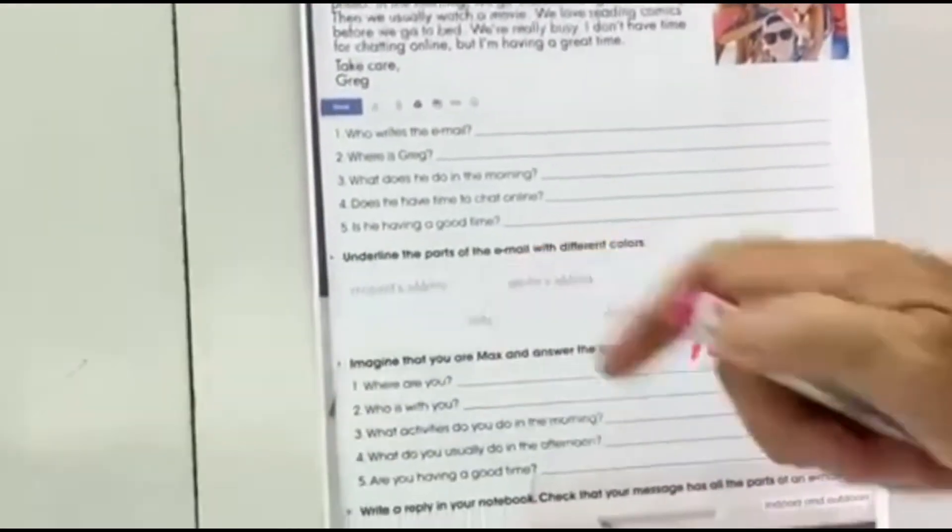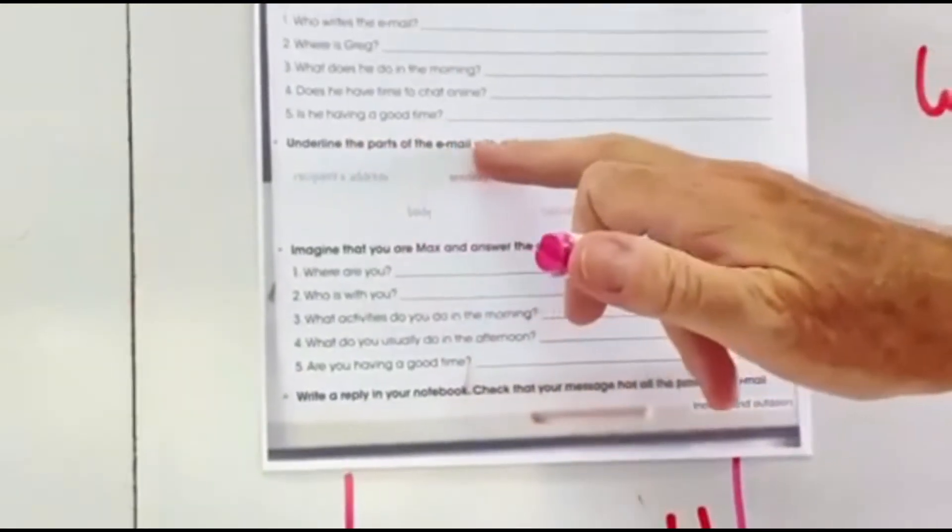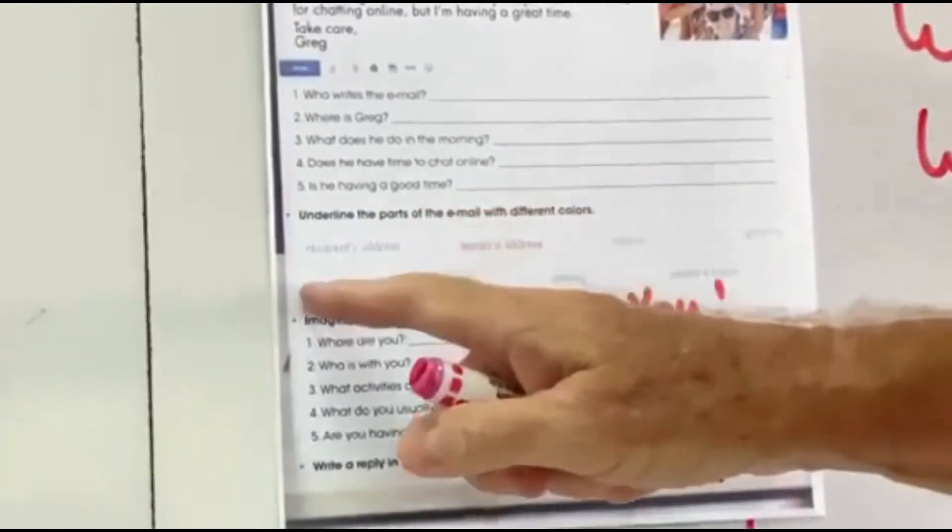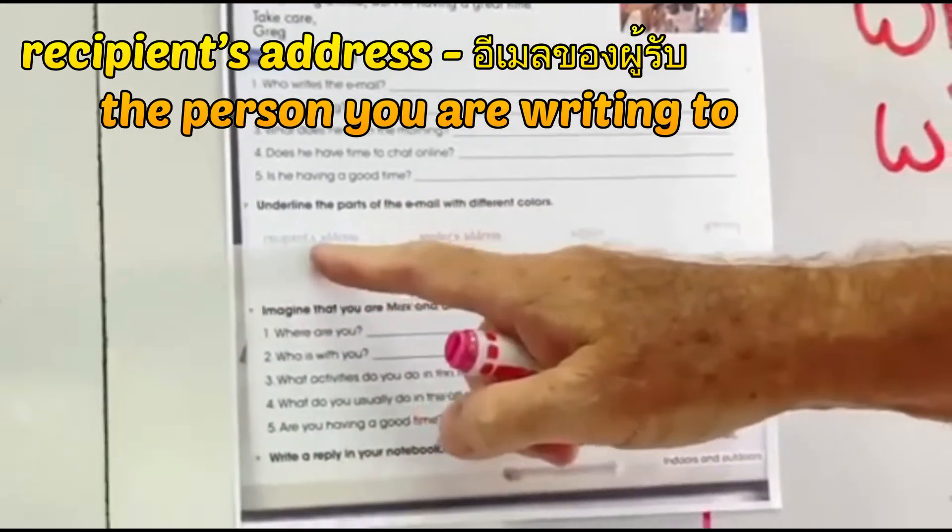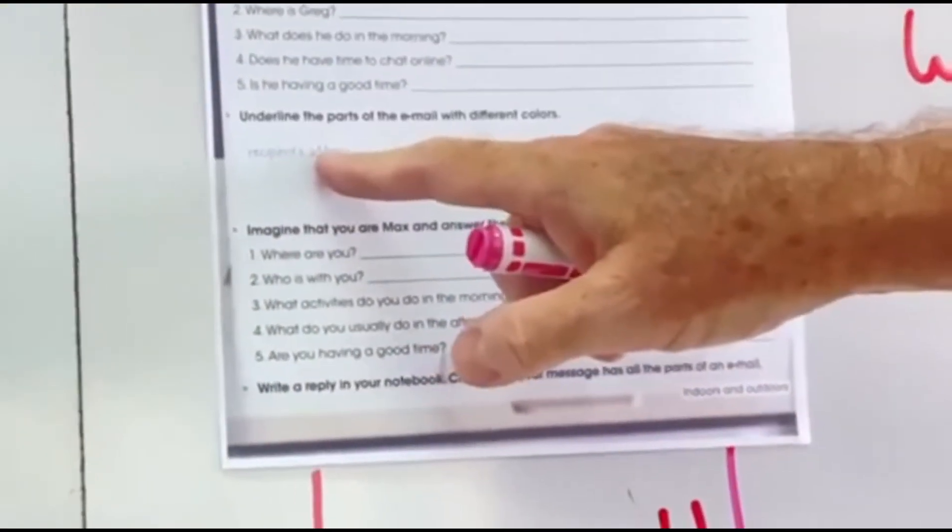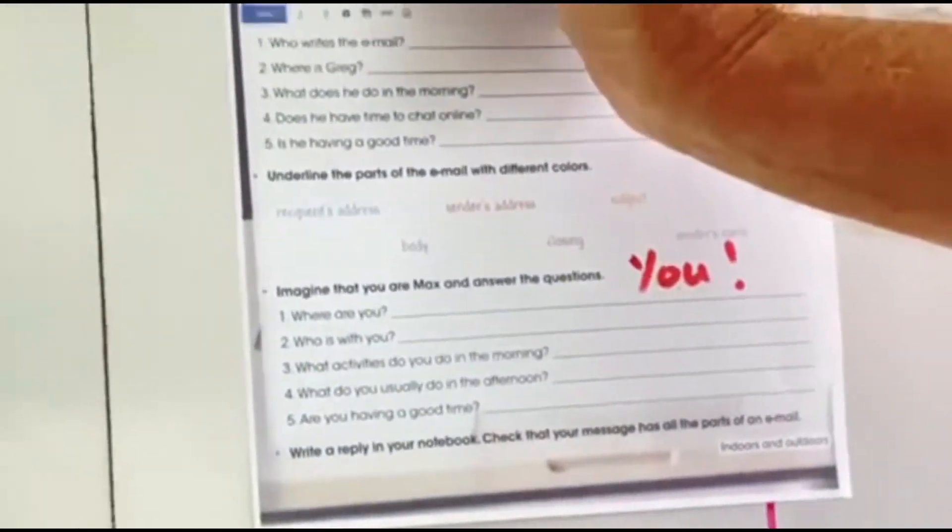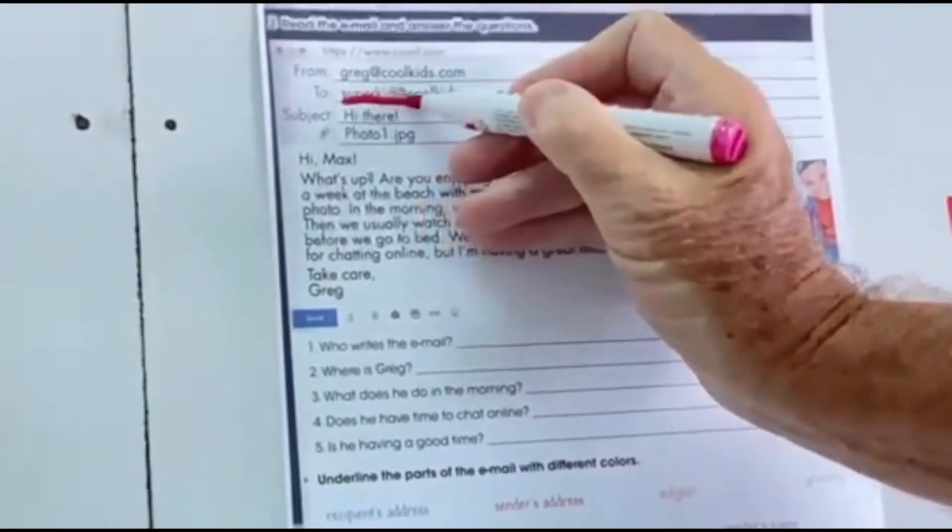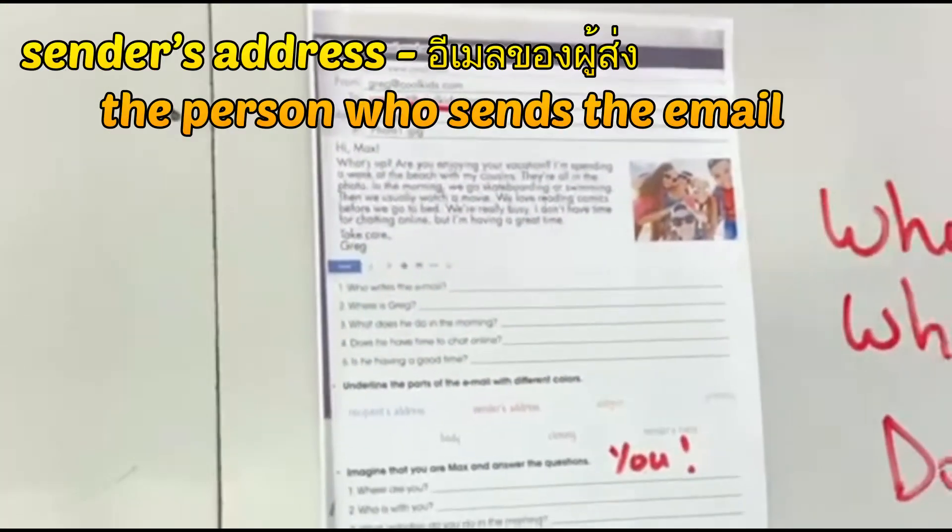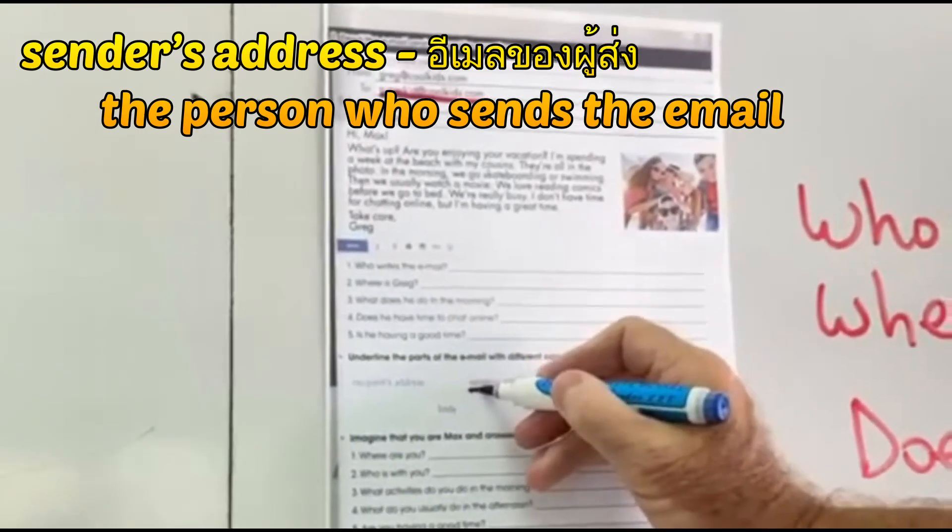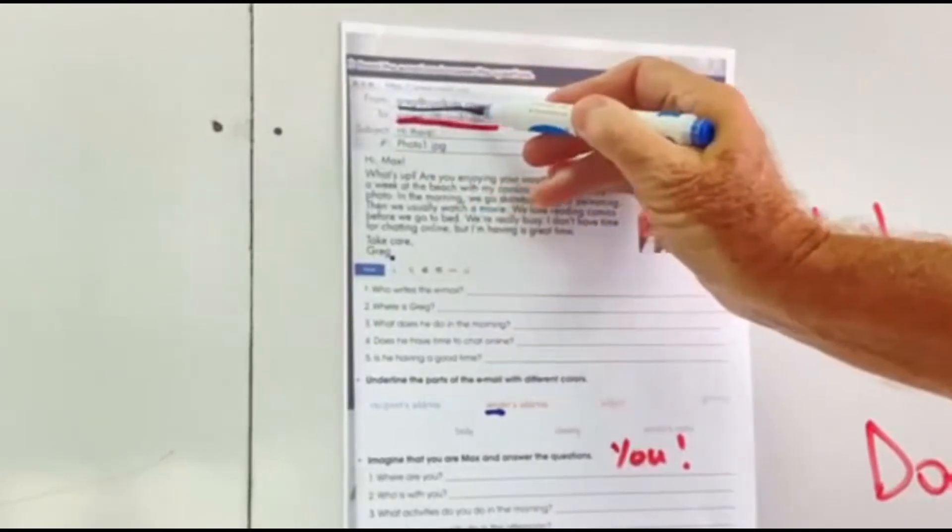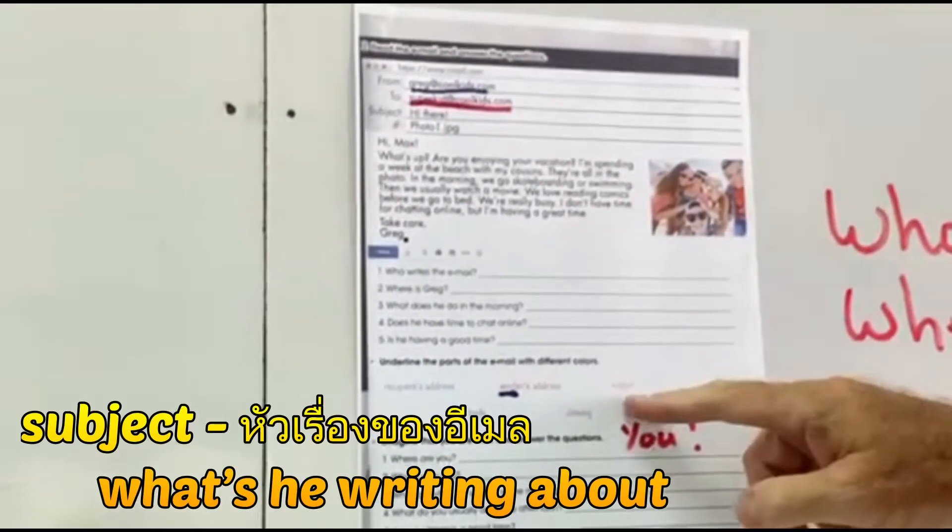Okay, now look at this little bit here. Underline the parts of the email with different colors. So recipient's address, the recipient is the person that you're writing to. Okay, so who's he writing to? He's writing to Max. That's the address of Max. Okay, next one, the sender's address. The sender is the person who sends the email. Greg sending the email. That's Greg's address.